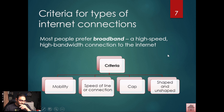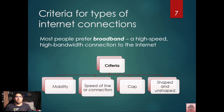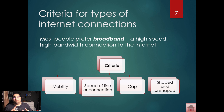The criteria for certain internet connections usually comes up in scenario questions. They'll tell you someone is setting up a home office or a new computer lab, and you have to work out what's best for that scenario — wired or wireless connection, certain hardware. Does it need to be mobile? How much data do they need? What's the difference between upload and download speed, and what is meant by bandwidth?